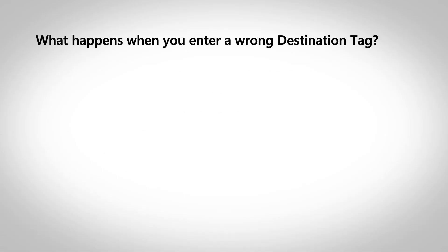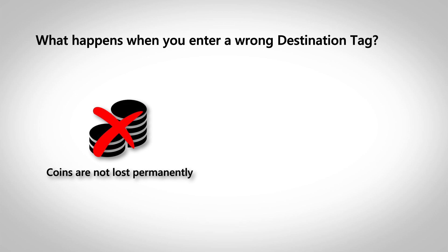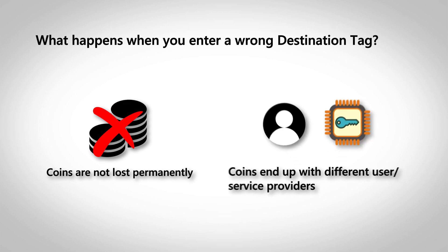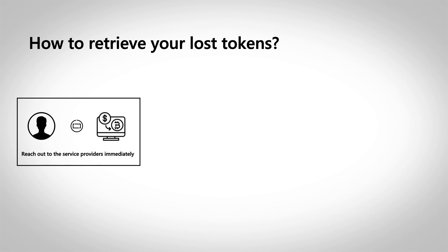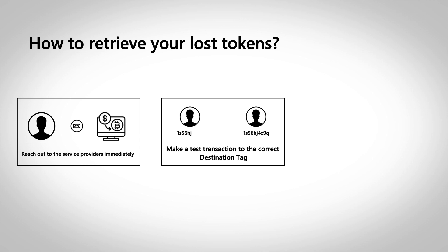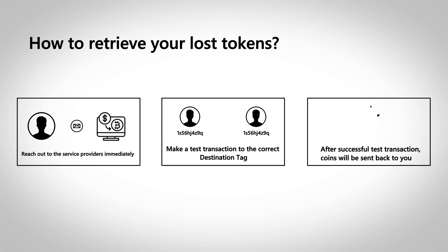Now, what happens when you enter a wrong destination tag or fail to enter it completely? It's not permanently lost like it would be with a Bitcoin transaction where a wrong address means the coins are all gone. With these coins, it would likely end up with a different user who has that particular tag, or with the centralized service provider. The only way to retrieve your tokens would be to reach out to the platform with the problem. The exchange will then ask you to make a test transaction to the correct destination tag to prove your ownership over the wallet. Once this is successfully proved, the coins will be sent back to you.